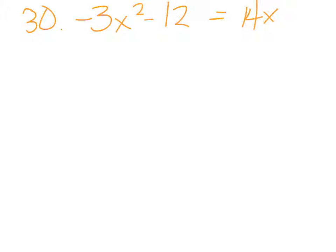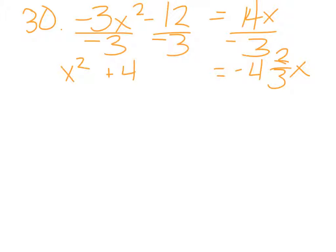Right away, before I do anything, I'm just going to divide everything by negative 3. And I'm going to get x squared plus 4 equals, and let's see, 14 and negative 3, I believe that's negative 4 and 2 thirds x. Which is really not that bad.